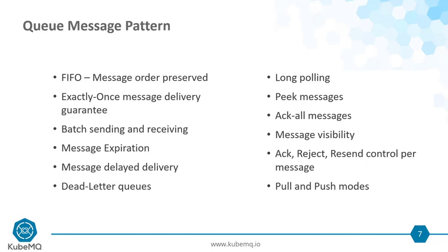The queue messaging pattern is very similar to Amazon SQS — a FIFO-based, order-preserved message queue with exactly-once message delivery guarantee. It supports batch sending and receiving, expiration, delay to processing, dead letter queues, long polling, and streaming of queues in and out. You can peek at the queue, see what messages are waiting for processing, then decide: ack all, change message visibility, reject messages, ack specific messages, or resend messages to different queues. It also supports pull and push modes.